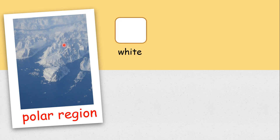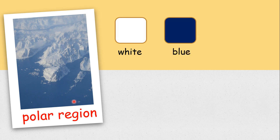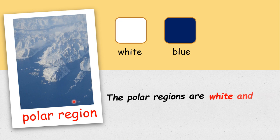Do you know what are the colors of the polar regions? Can you see the icebergs and the snow? They are white. And how about the ocean? It is blue. So the polar regions are white and blue.